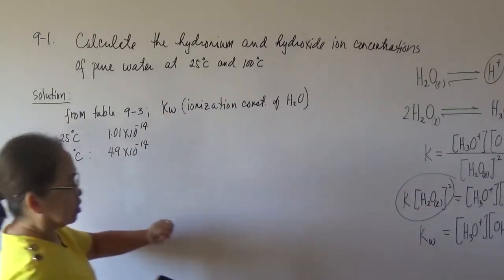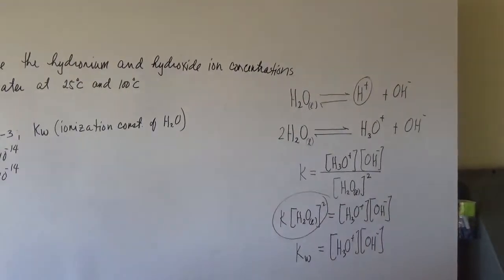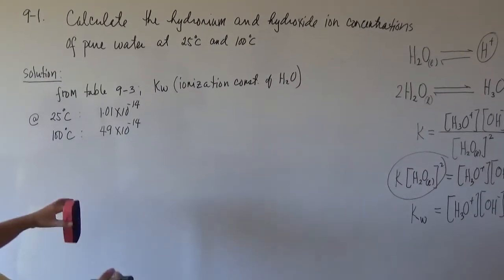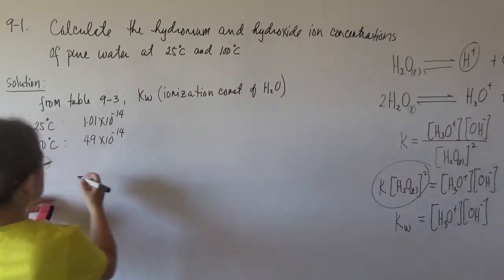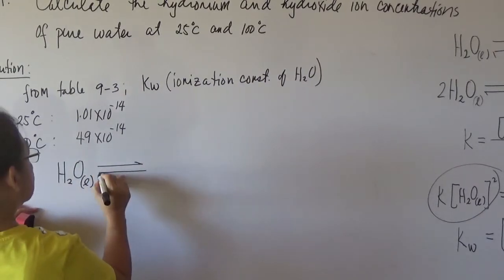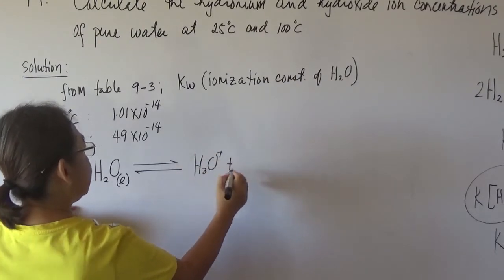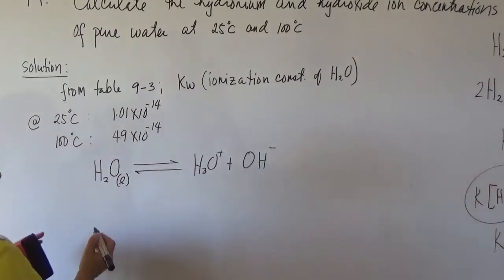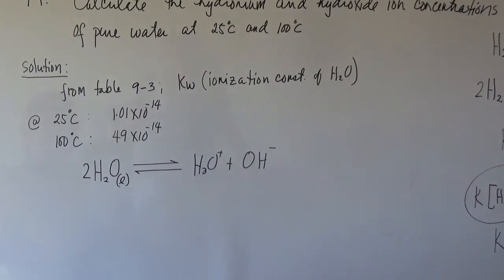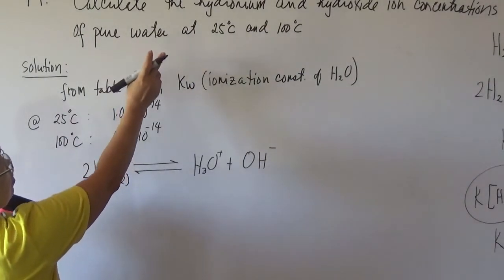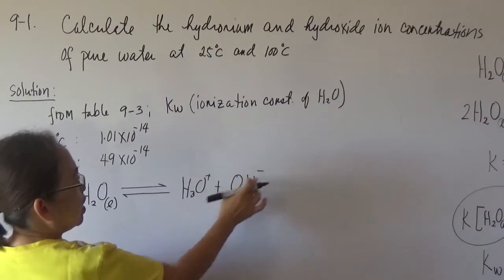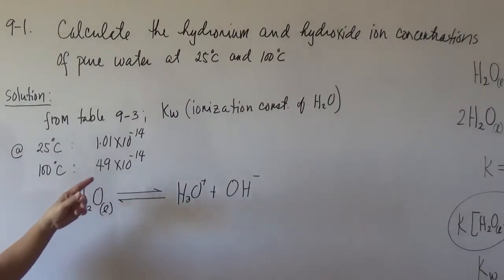So if it involves water, you can immediately write this equation. We are going to calculate the hydronium ion and hydroxide ion concentration. So same as before — two moles of liquid water will ionize into one mole of hydronium ion and one mole of hydroxyl ion. You are given the ionization constant of water, which you can find in table 9-3.